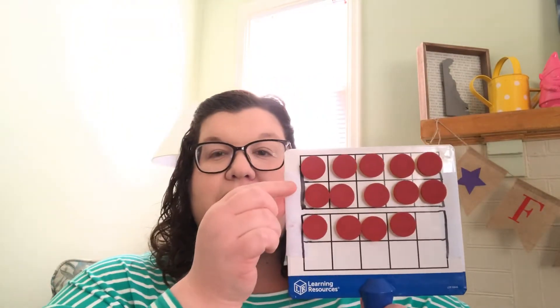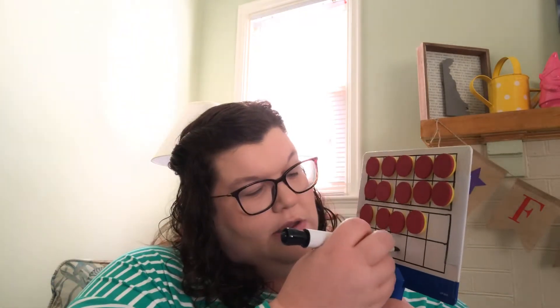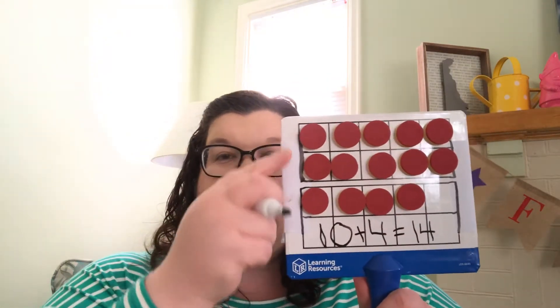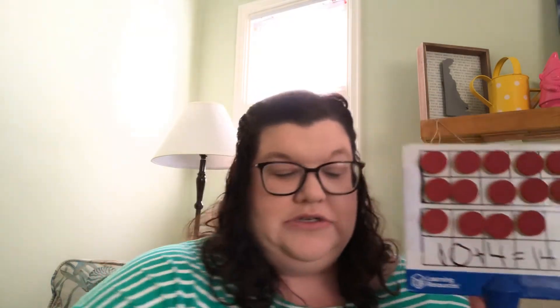Now let's look at our groups to make an equation. Look up here — how many do we have in this group? Yes, 10. And how many do we have at the bottom? That's right, we have four. 10 plus four makes our 14. Let's all read that together: 10 plus four equals 14. We've got 10 on the top tens frame and four on the bottom tens frame, which equals 14.